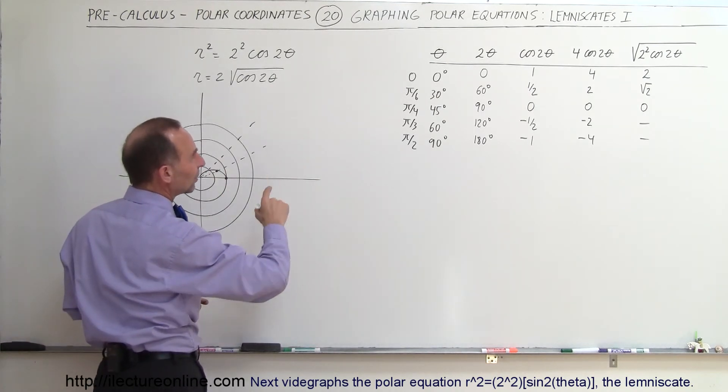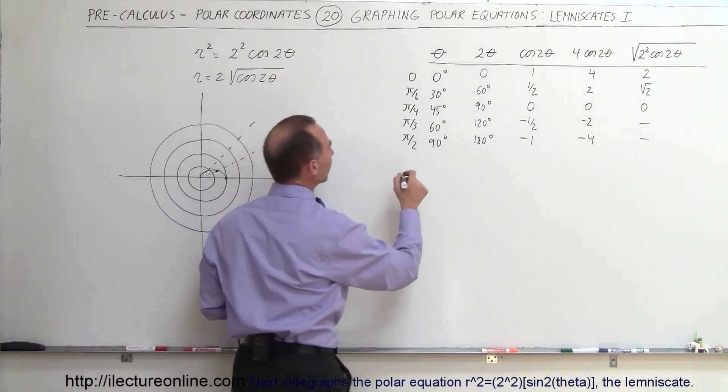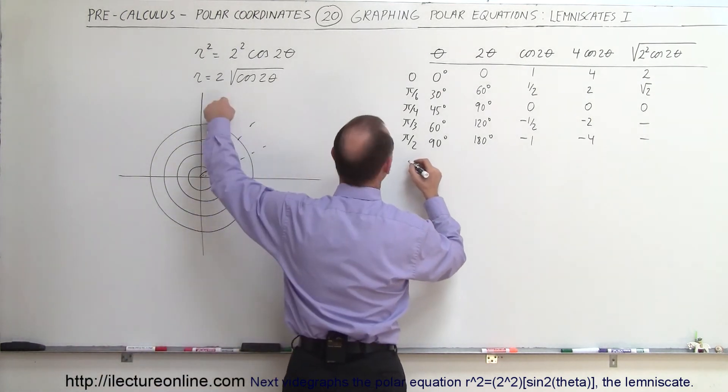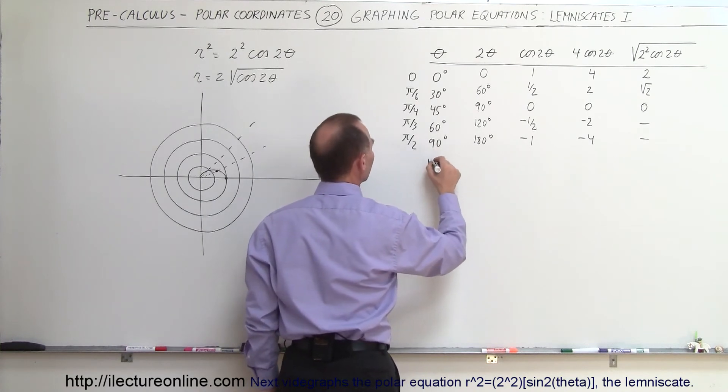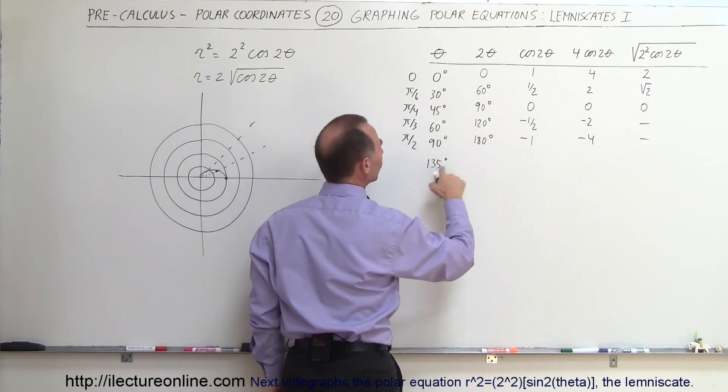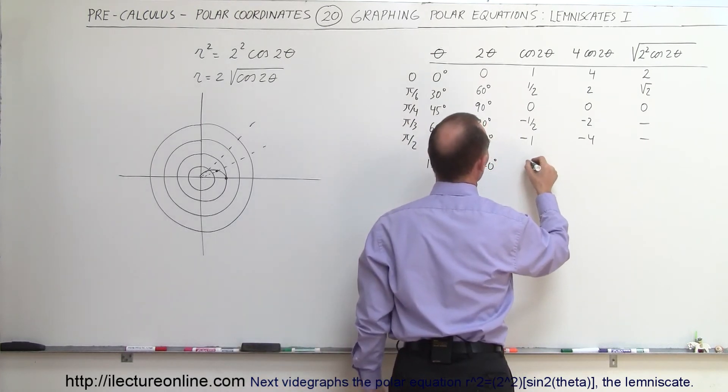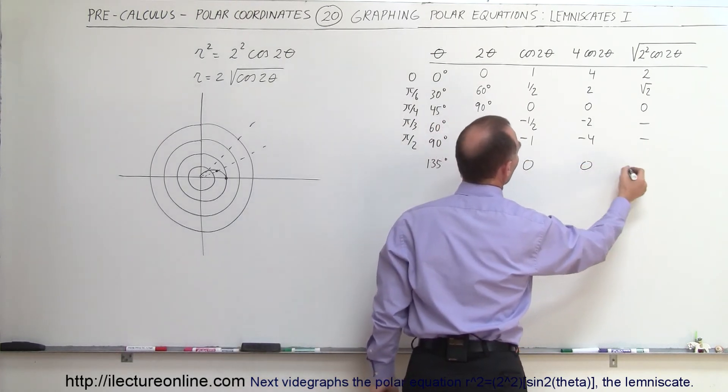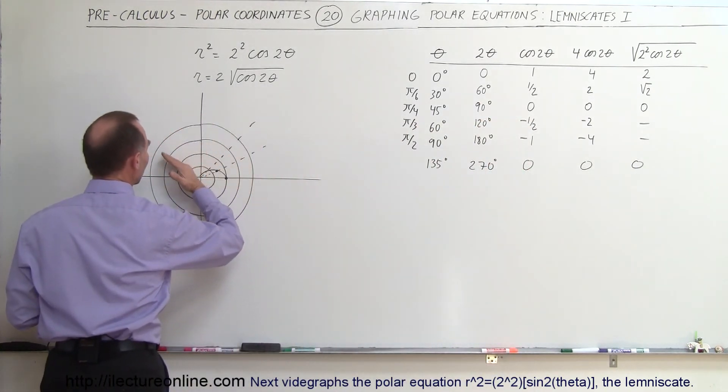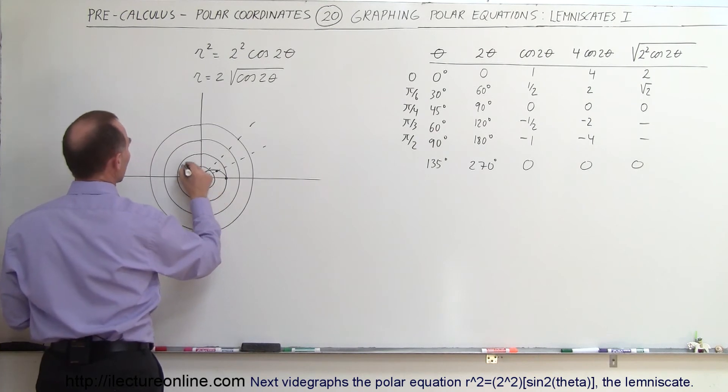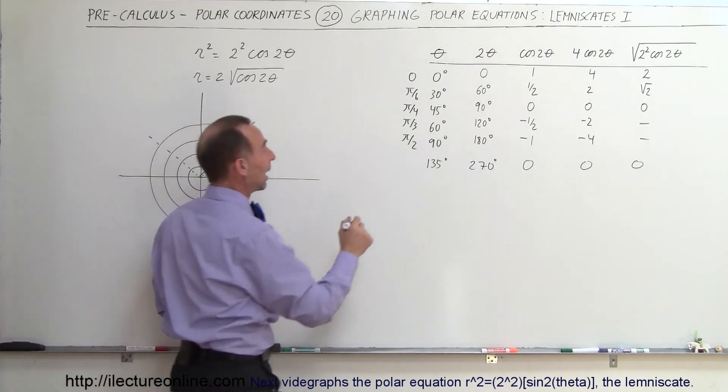And then at 60, from 60 to 90, notice we do not get acceptable values, we no longer get accepted values until we're back at, let's see here, at 135. So at 135 degrees, we take twice that number, which is 270 degrees, that means we have the cosine of 0, that will be 0, and this will be 0. So not until we have an angle of 135 degrees, which is in this direction, we get back 0.